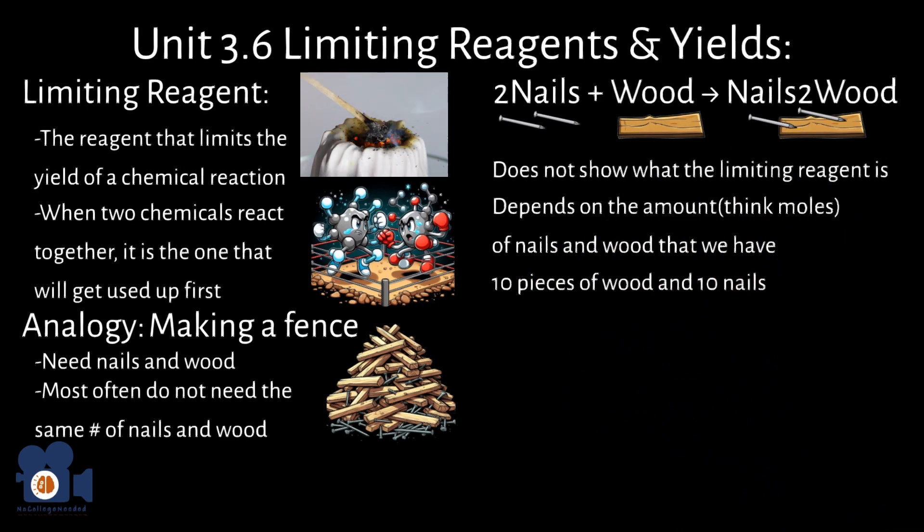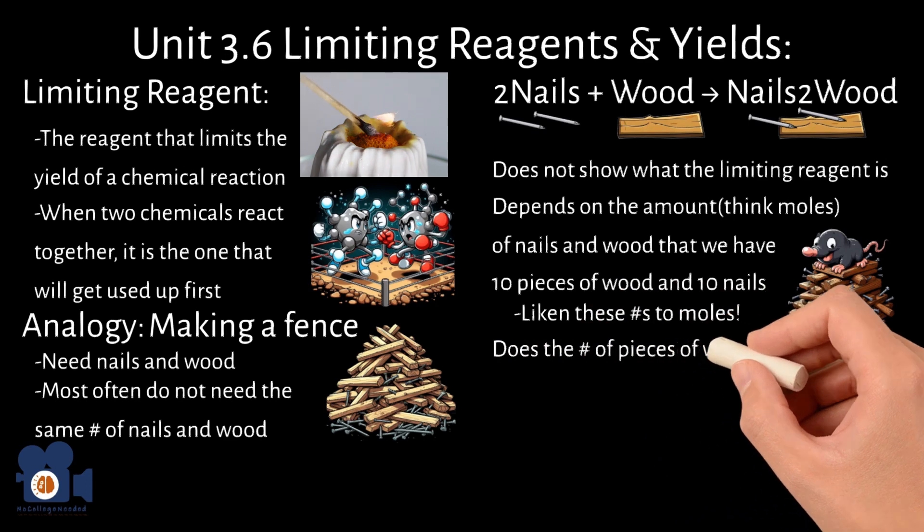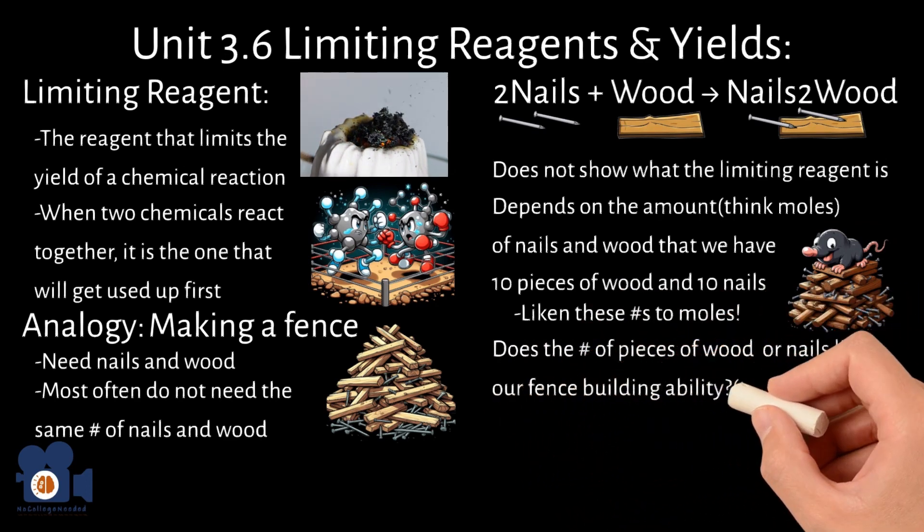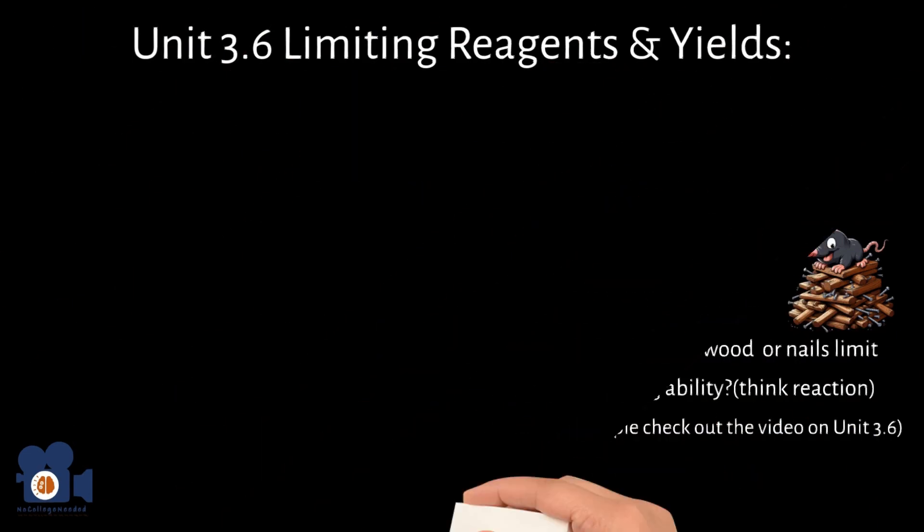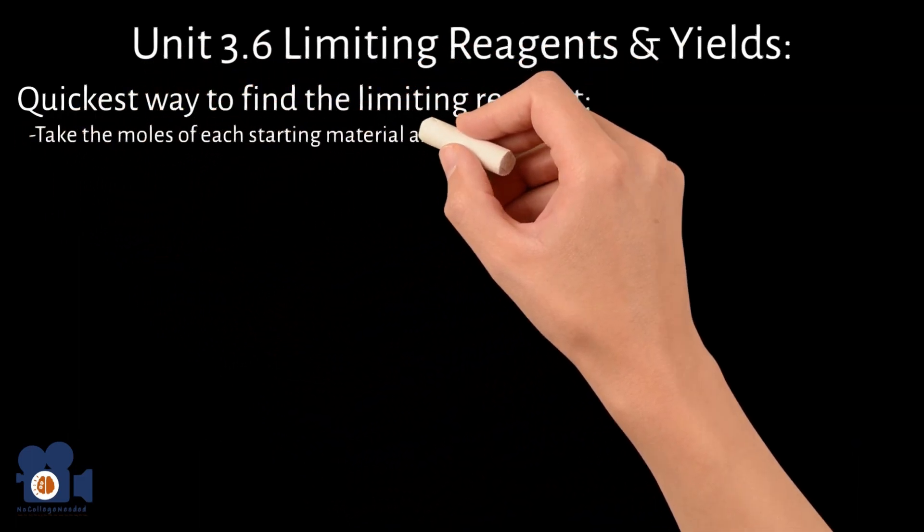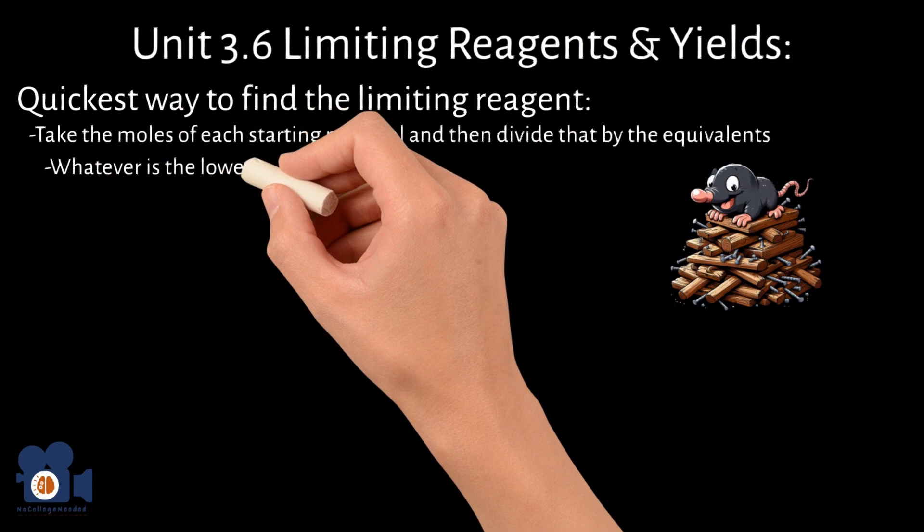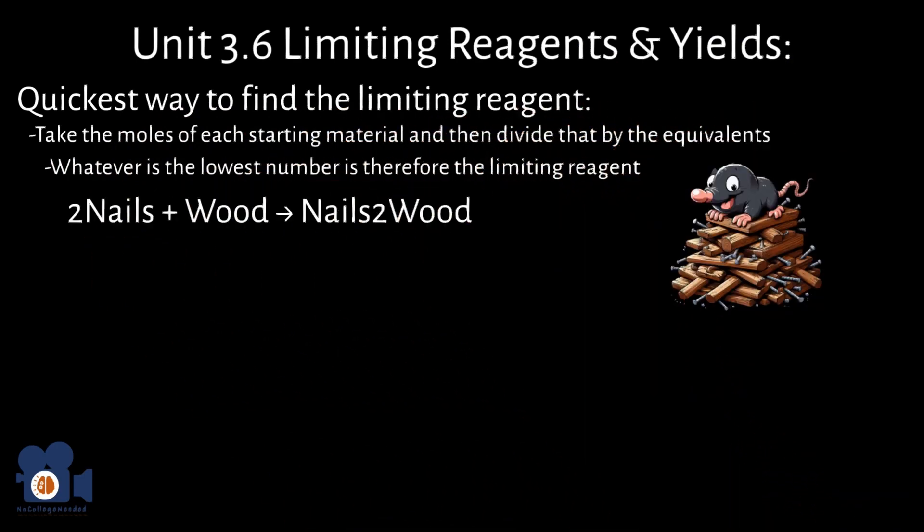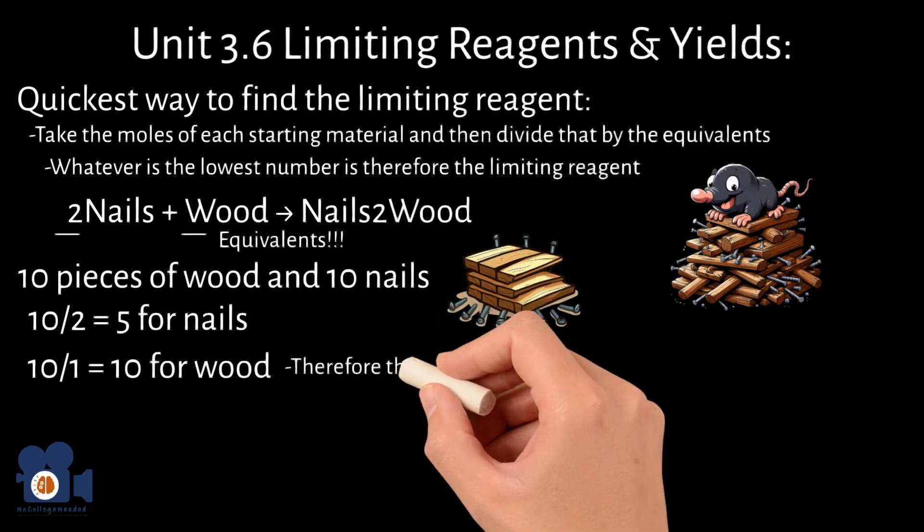Remember, we can liken these numbers to moles because moles is the amount of substance and 10 is the amount of wood and nails. So does the number of pieces of wood or nails limit our fence building ability? Think reaction. To see the in-depth example with the wood and chemicals, please check out the video on Unit 3.6. The quickest way to find what the limiting reagent is, is to take the moles, again think number or amount of a substance of each starting material, and then divide that by the equivalents. Whatever is the lowest number is therefore the limiting reagent. In our example, there are two equivalents of nails to one equivalent of wood. 10 divided by each of those gives 5 nails to 10 wood. Therefore, the nails in this case are the limiting reagent.